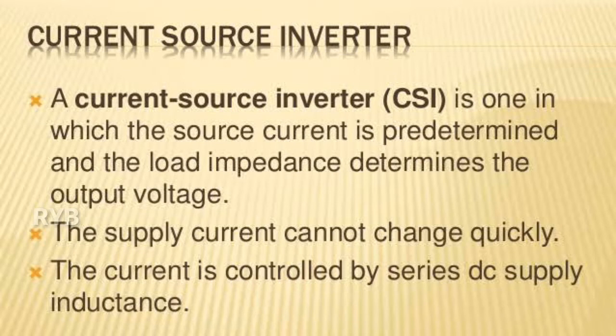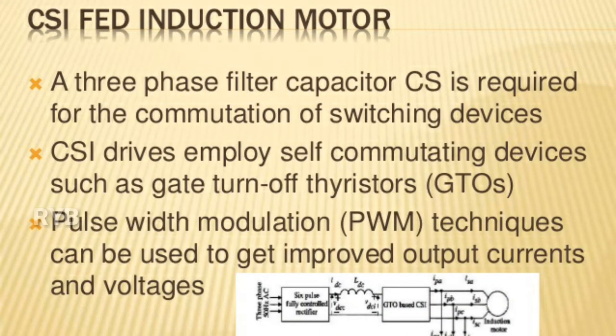A voltage source inverter (VSI) is fed by a stiff DC voltage, whereas a current source inverter (CSI) is fed by a stiff current source. A voltage source can be converted to a current source by connecting a series inductance and then varying the voltage to obtain the desired current. A VSI can also be operated in current control mode, and similarly a CSI can also be operated in voltage control mode. Inverters are used in variable frequency AC motor drives, UPS, induction heating, and static VAR compensators.